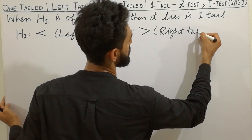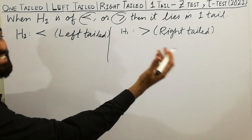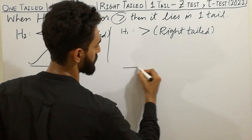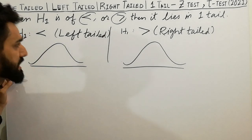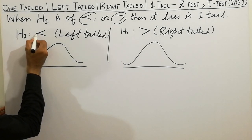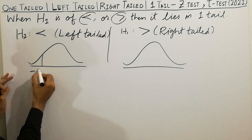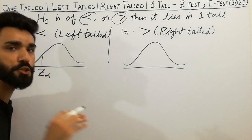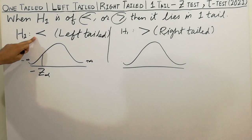Now I am going to discuss the diagram of one tail for z-test and t-test. This is the diagram of the normal distribution, also used in hypothesis testing. For the left-tail test, this side of the diagram has the value minus Z-alpha, because the normal distribution always ranges from minus infinity to plus infinity.